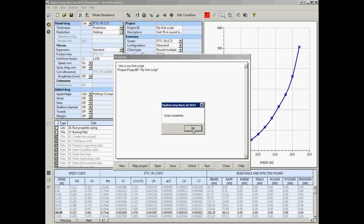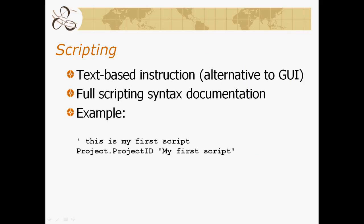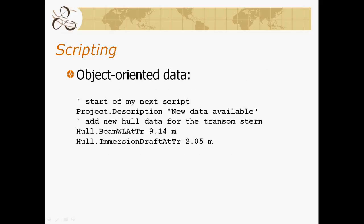When we run this, the script completes and you'll see the data in the background has changed. Let's look at something a little more complicated to reiterate the idea of this being object-oriented — we'll have a project object and description as an attribute. We're going to change the description line to 'new data available', and add data for the transom stern: the beam at the waterline at the transom and the immersion draft at the transom. We can enter these two figures via scripting.